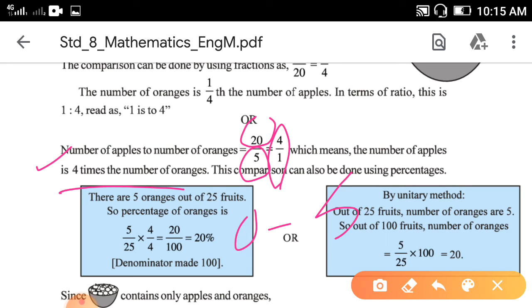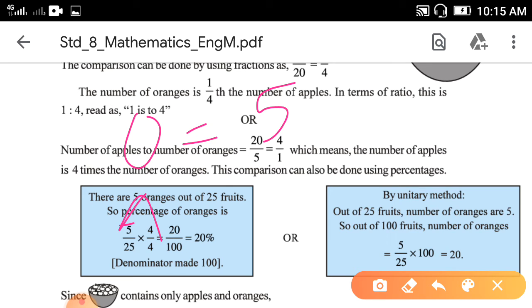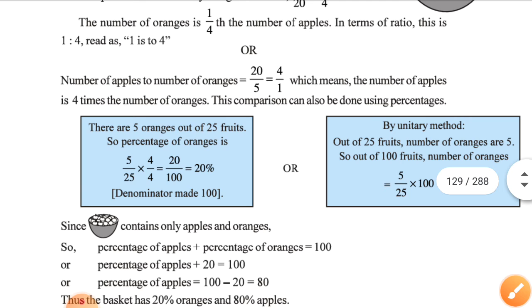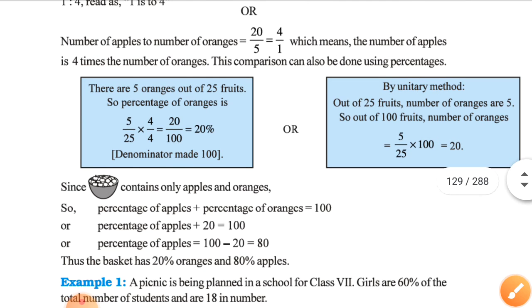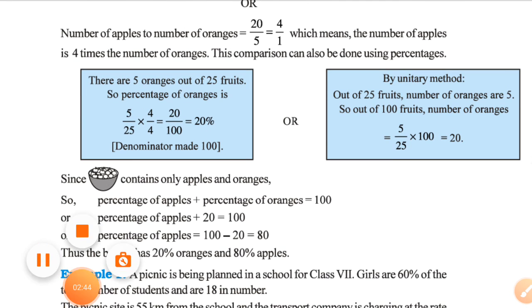The number of oranges is 5 and the number of apples is 20, so the number of apples is 4 times the number of oranges. This is about the comparison of quantities.